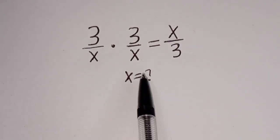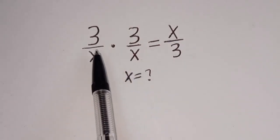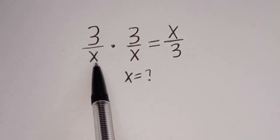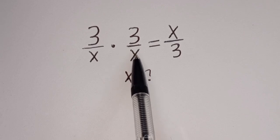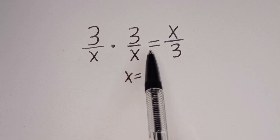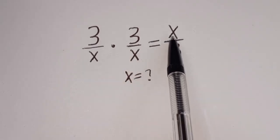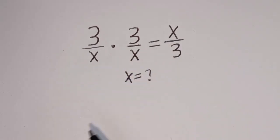Hello. How to solve for s in this equation: 3 divided by s, multiplied by 3 divided by s, is equal to s divided by 3.